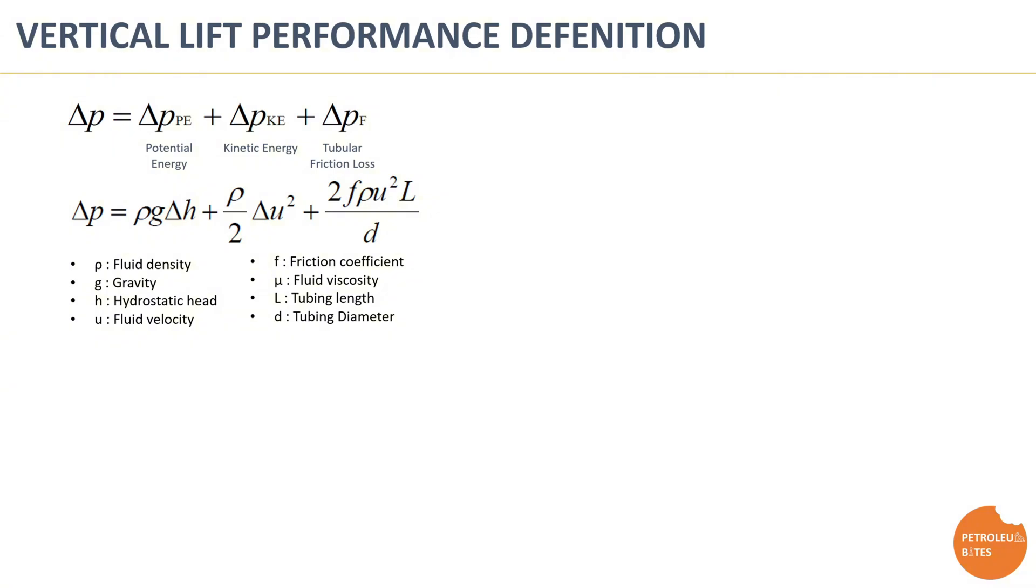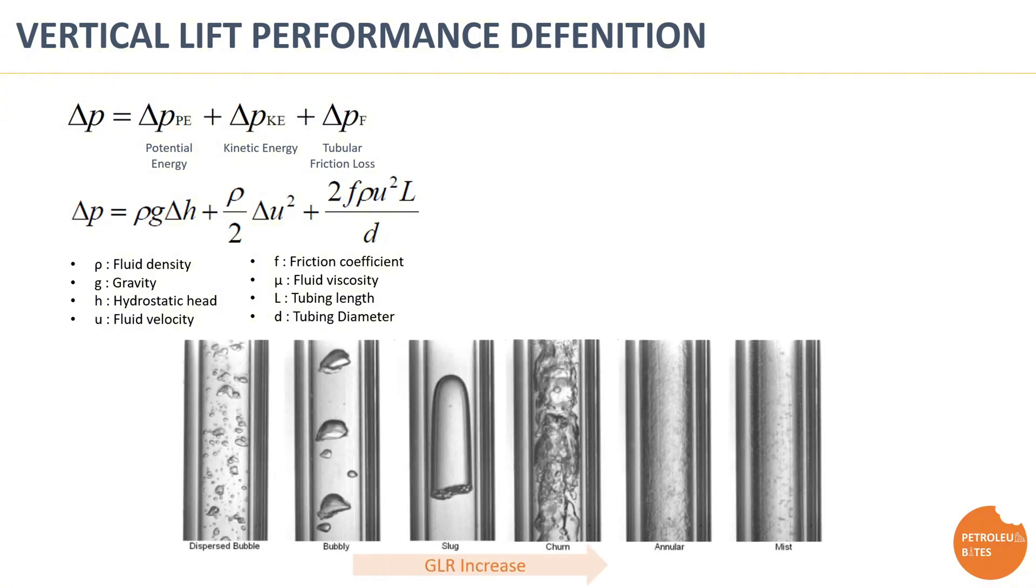The vertical lift performance is influenced by a number of factors. Fluid type as gas, oil, and water all behave differently under flow, affecting the pressure required to lift them. The diameter and the length of the tubing as well as the restrictions in the wellbore play a significant role in frictional losses. Flow regime is significantly affected by the gas-liquid ratio of fluid, as flow can be laminar or turbulent, with turbulent flow requiring higher pressure to maintain the same flow rate.